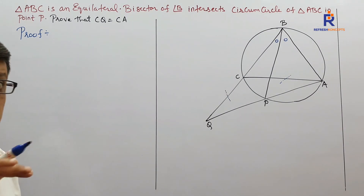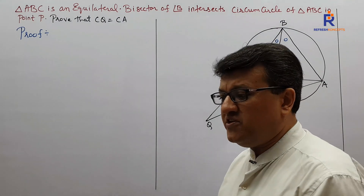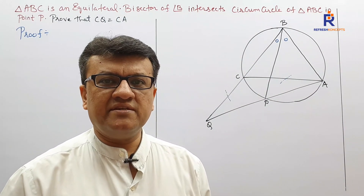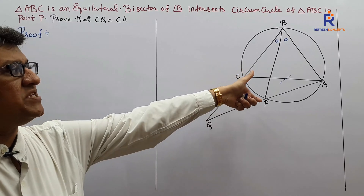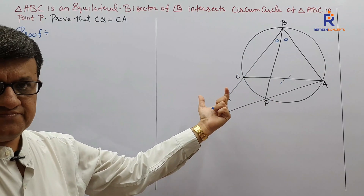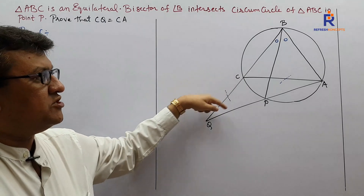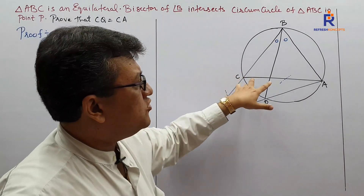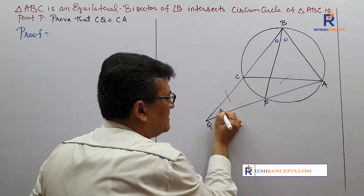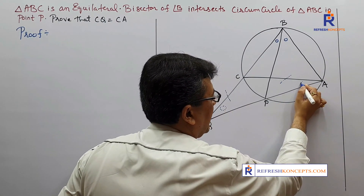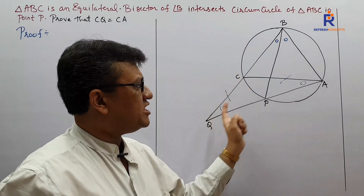I'll give you something called the 'shifting to proof' technique. In geography you have shifting cultivation — this is my way of teaching geometry. Shifting to proof means: if I want CQ equals CA as my final step, I should first go into triangle CQA and figure out what I need to prove there.